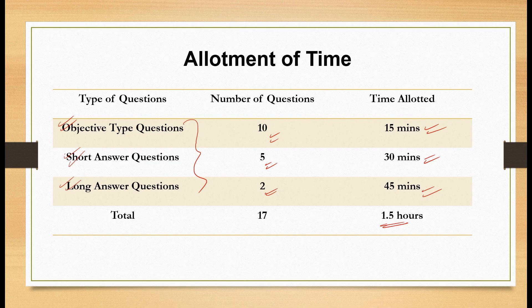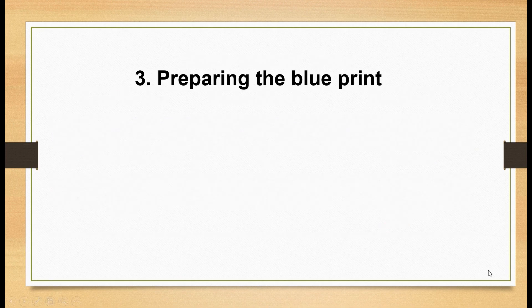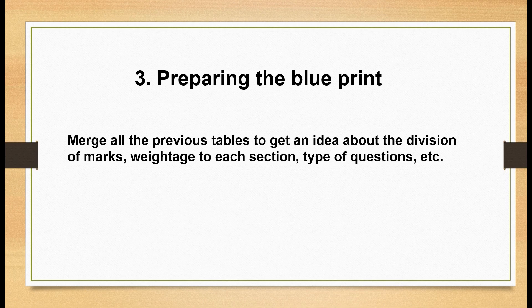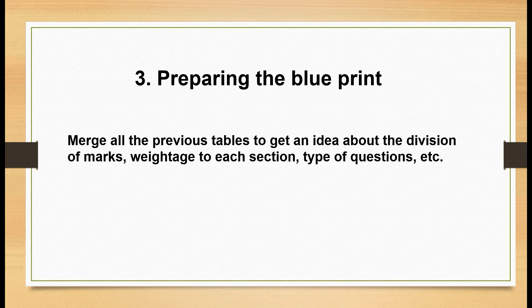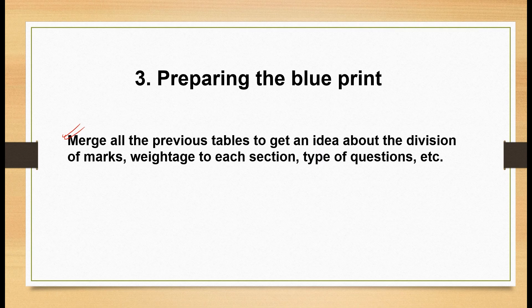Step three: preparing the blueprint. In simple words, this step is to merge all the tables made in step two. In step two we made tables estimating the weightage for objectives, the weightage for types of questions, and the allotment of time for each type of question. We put all those tables together to get the rough sketch or blueprint — giving us an idea about the division of marks, weightage to each section, types of questions, and the estimate of content that will be in the achievement test.